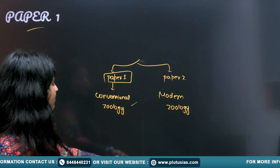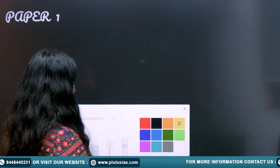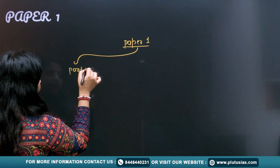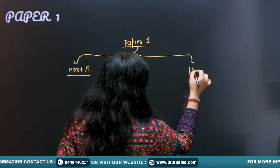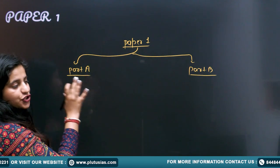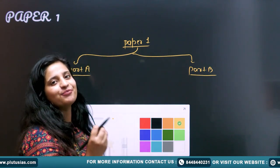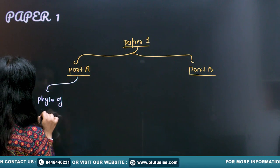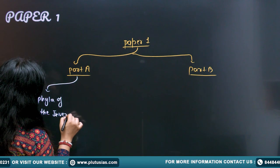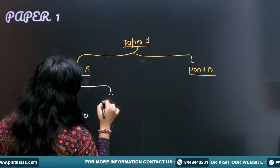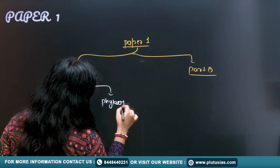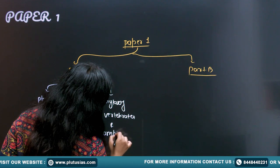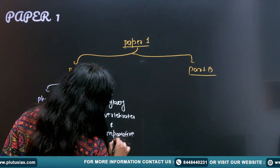Now, going to start with the paper first. In paper first, you have two parts. Paper first has two parts - part A and part B. Part A has which subjects or topics? Part A is like the heart of paper one. In part A, you have phyla of the invertebrates, and then you have the phyla of vertebrates and comparative anatomy.